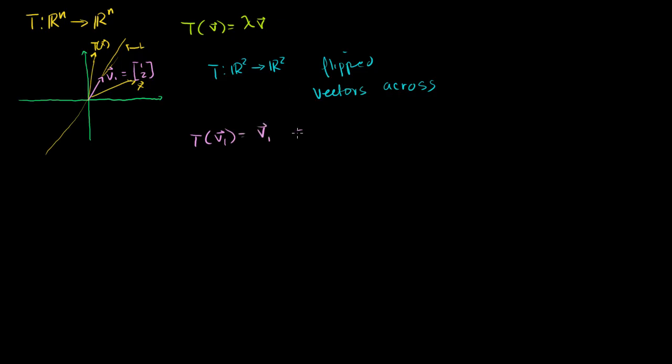Or we could say that the transformation of V1 just equaled 1 times V1. So if you follow this little format that I set up here, lambda in this case would be 1. And of course, the vector in this case is V1. The transformation just scaled up V1 by 1.